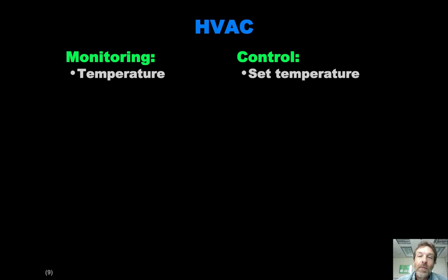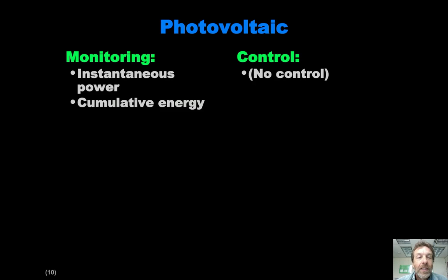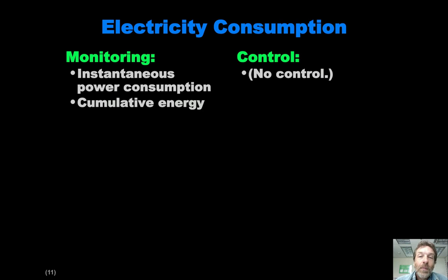For the HVAC system, we currently have relatively simple monitoring and control — just setting the temperature and monitoring what the temperature is. The HVAC people have suggested other things like the amount of essentially stored energy in the holding tanks, but that's something we want to work more with the HVAC folks to understand better for Milestone 3. For photovoltaics, we'll use an e-gauge meter, which gives us the ability to monitor power and energy — no real control is necessary. For electrical consumption in the house, we're designing for Milestone 2 under the assumption that there's a single meter giving us consumption for the entire house, so we can't get appliance-level consumption. For a later milestone, I'm hoping to add wireless plug load monitors.